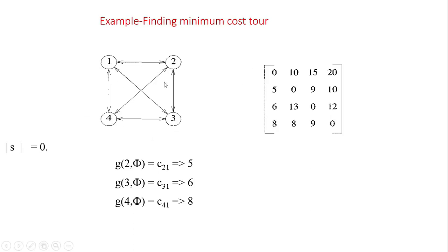In this example, there are four cities and the costs given on the right side represent the cost of the edges — the cost between each pair of cities. In the dynamic model, we first solve smaller subproblems, then combine all the subproblems to solve the actual problem. It is a bottom-up approach.